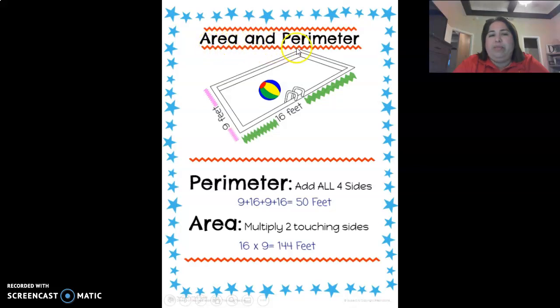Remember we did this last week, area and perimeter. We're going to do the same thing. Remember the perimeter, you add all four sides: 9 plus 16 plus 9 plus 16. They're all the same. These two are the same size and these two are the same size. So the area, you multiply two touching sides like these two right here they join. So you multiply 9 times 16 and that is the area. The area is what's inside.